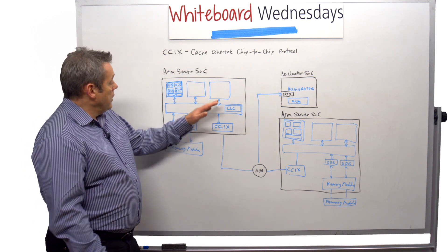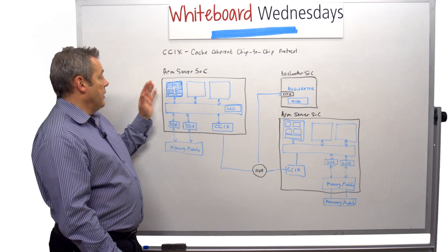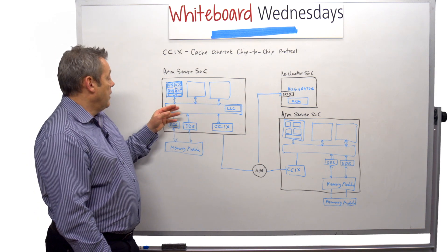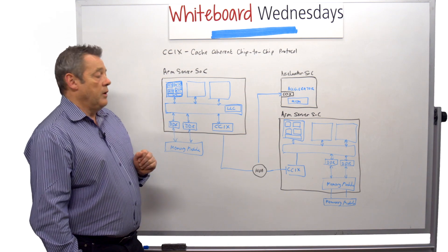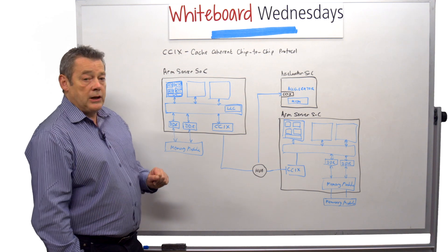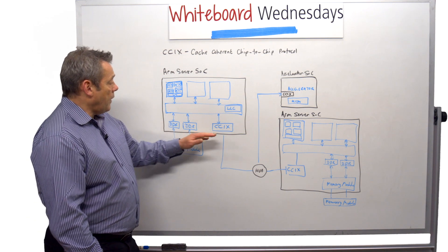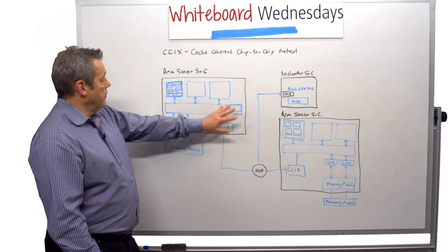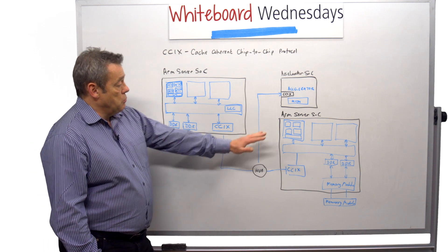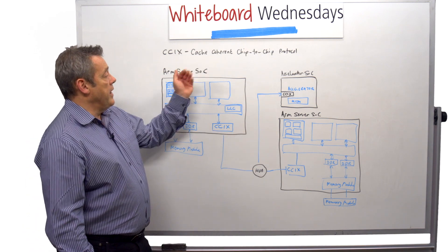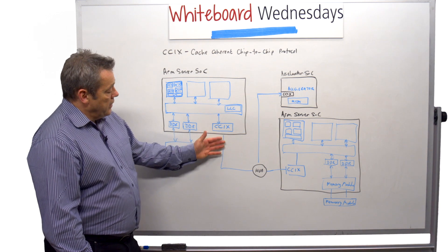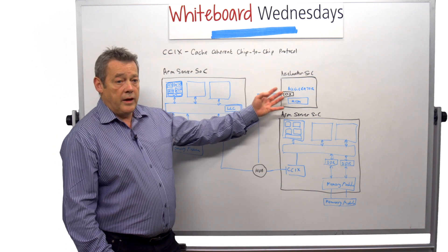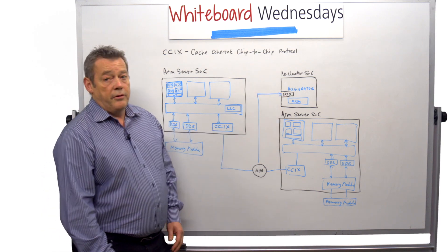So I've drawn here a simple block diagram of a typical ARM server. We've got some clusters of processors with L3 cache, L2 cache inside them, an interconnect with a last level cache and some memory. And the CCIX interface provides a connection from a cluster of this type to other devices. As its name describes, chip-to-chip protocol. There's an interface that goes out to other devices such as accelerator SOCs or other ARM server SOCs.